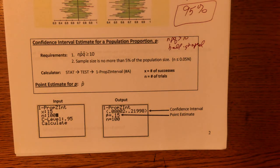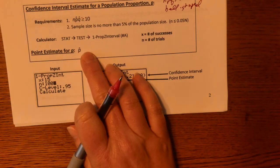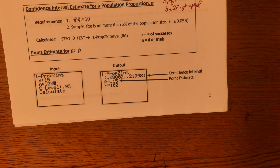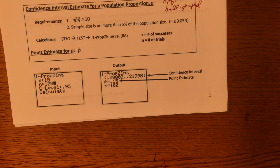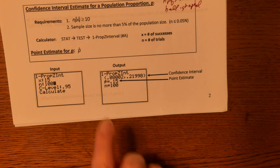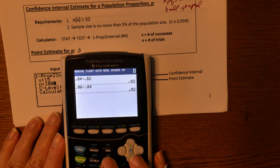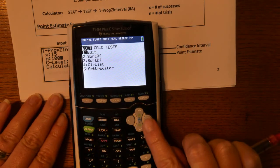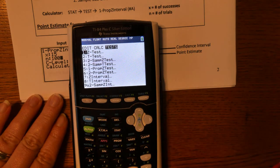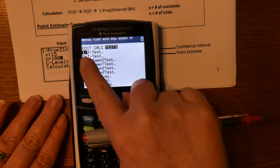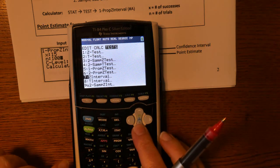In your calculator, if you are asked to find a confidence interval and you know that the data is a proportion — in other words, you know the survey question was a yes or no question, like do you like chocolate chip cookies, do you watch Friends on TV, do you like the Dallas Cowboys — you are dealing with proportions. Go to the STAT menu and arrow over to TESTS.